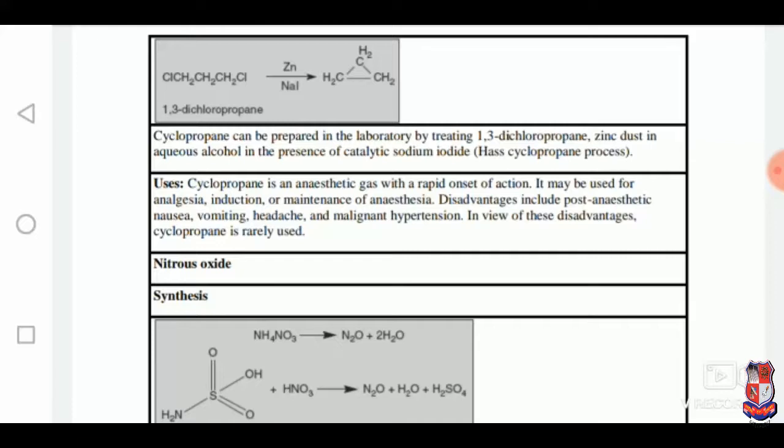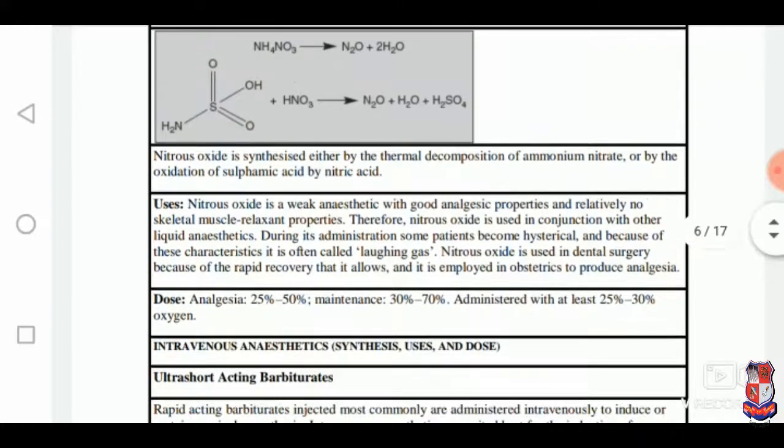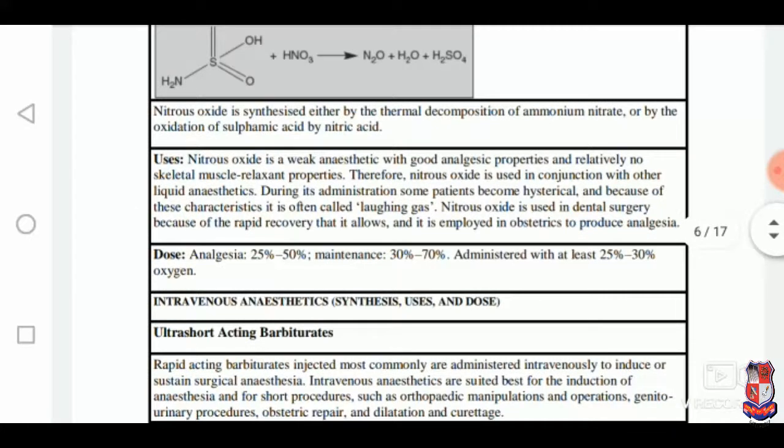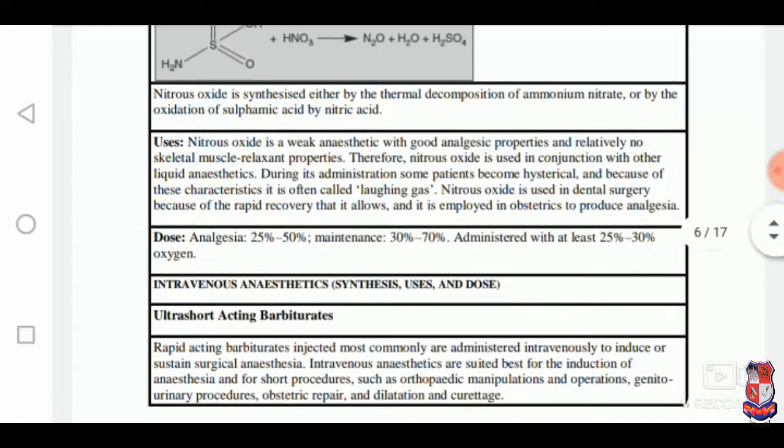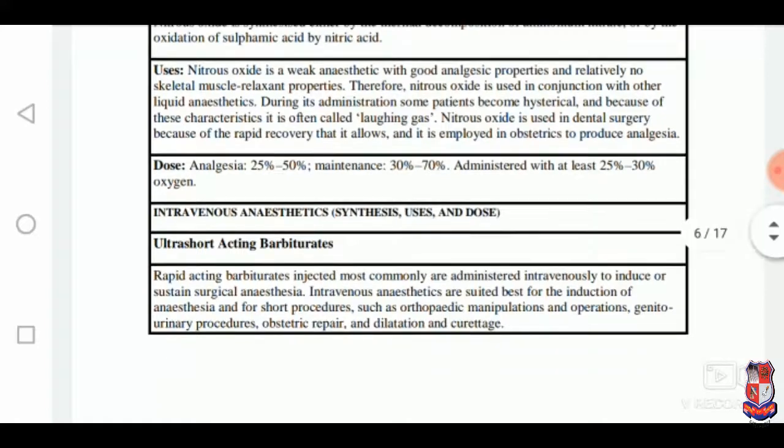Nitrous oxide: it is synthesized either by thermal decomposition of ammonium nitrate or by oxidation of sulfamic acid by nitric acid. It is a weak anaesthetic with good analgesic property but no skeletal muscle relaxation property. It is widely used in dental surgery. Dosage is 25% to 50%.